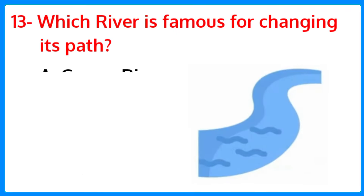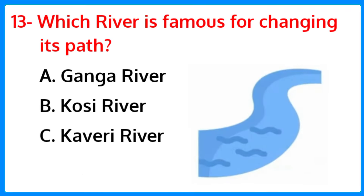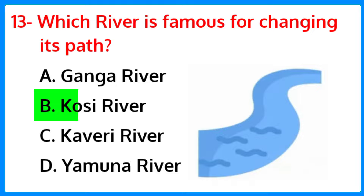Which river is famous for changing its path? The correct answer is option B — Kosi River.